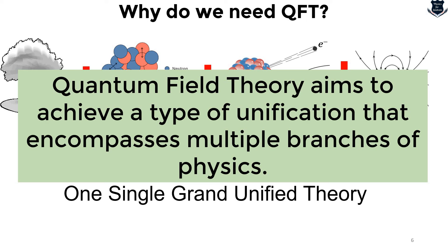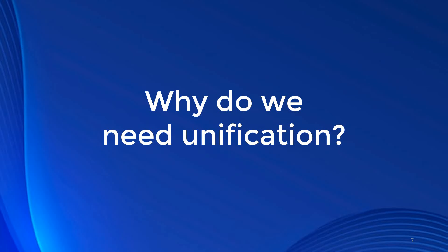So we can understand that quantum field theory is actually this kind of a unification theory. It aims to achieve a type of unification encompassing multiple branches of physics. Gravity, strong, weak, and electromagnetism together in one single theory — and that leads to the next question: why do we need unification at all, rather than developing separate theories for each force?